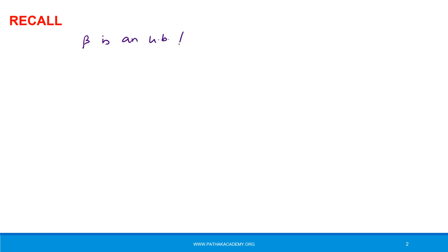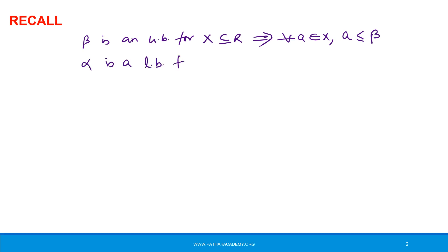We know that beta is an upper bound for a set X subset of R. It simply means that for all A in X, A is less than or equal to beta. Similarly, alpha is a lower bound for X subset R. It simply means that for all A in X, alpha is less than or equal to A.